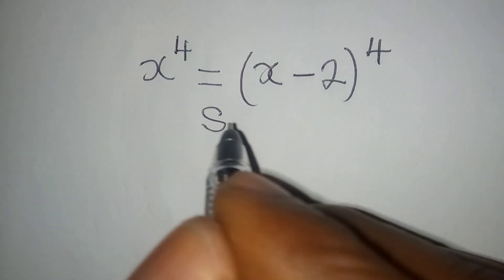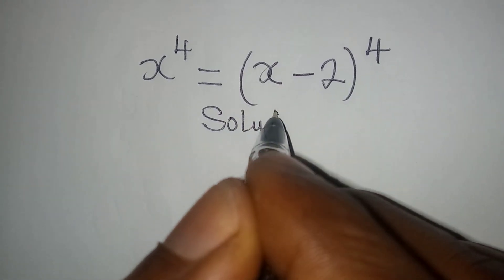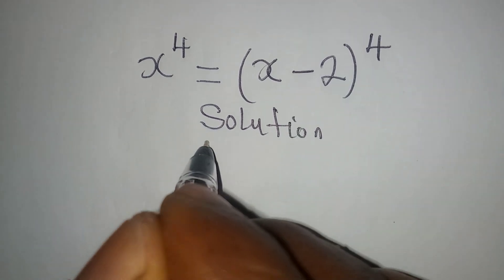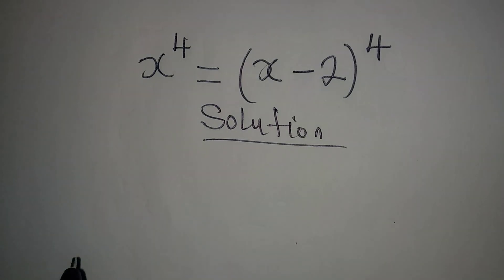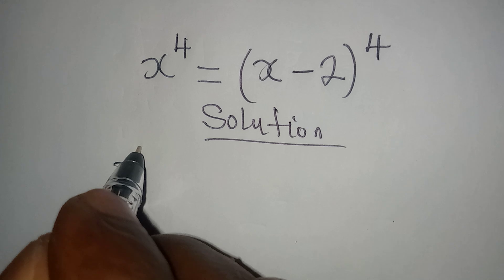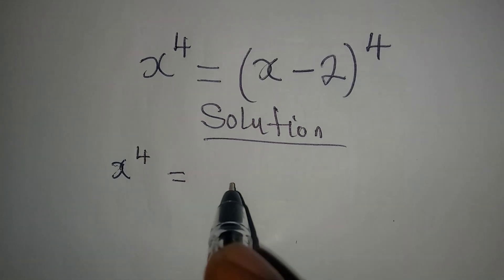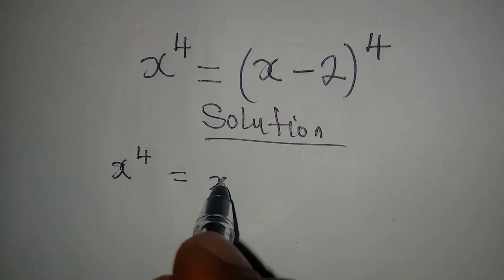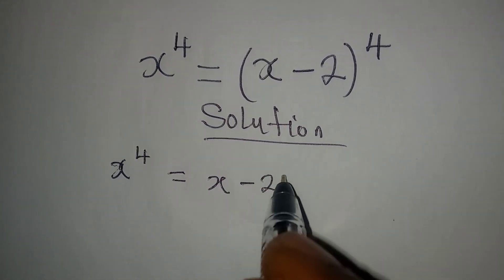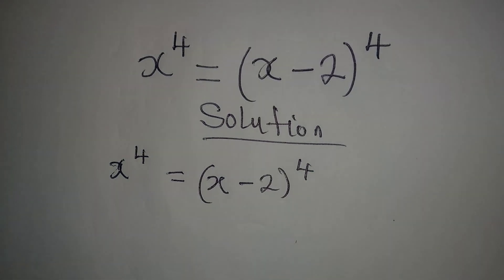Hello everyone. Let's provide a solution to this problem: x to the power of 4 equals x minus 2 to the power of 4.